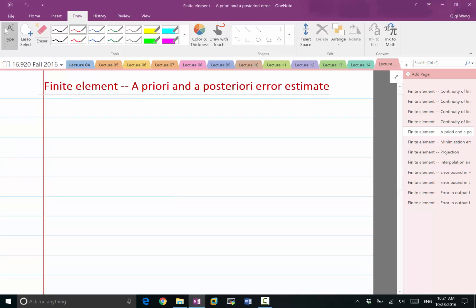They are different in the sense that for a posteriori error estimate, we always have a V and a VH.